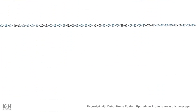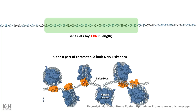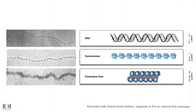If we consider a gene of length one kilobase, we cannot imagine just a blunt picture of a DNA segment spanning one kb. Along with the DNA there are histones forming the nucleosome bead-on-a-string arrangement. If the gene length is one kb and one nucleosome spans roughly 200 base pairs, there would be at least five nucleosomes along with the DNA.